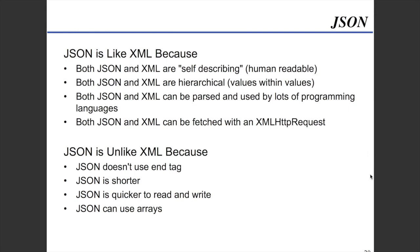Here's a side-by-side comparison. JSON is like XML because both are self-describing and human-readable. Both JSON and XML are hierarchical — values within values. Both can be parsed and used by lots of programming languages, and both can be fetched with an XMLHttpRequest. JSON is unlike XML because JSON doesn't use end tags, JSON is shorter, JSON is quicker to read and write, and JSON can use arrays.